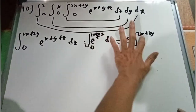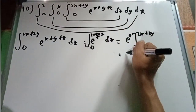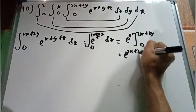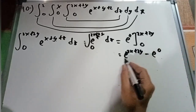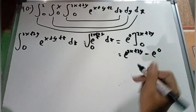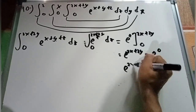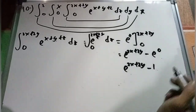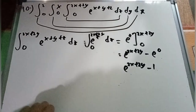So evaluating from 0 to 2x plus 2y, we get e to the 2x plus 2y minus e to the 0. Since e to the power of 0 equals 1, the result of the first integration is e to the 2x plus 2y minus 1.